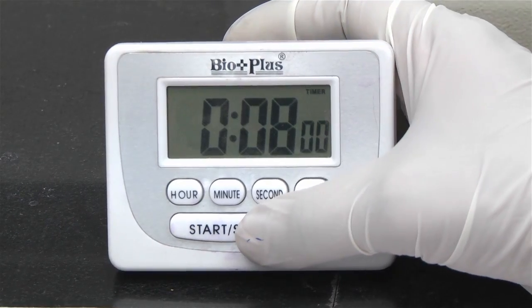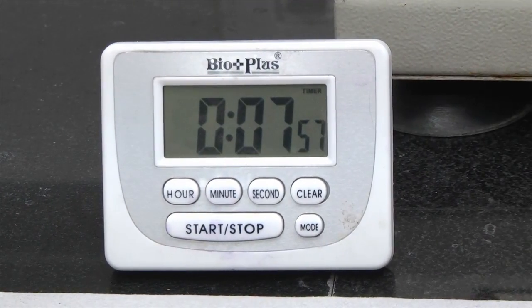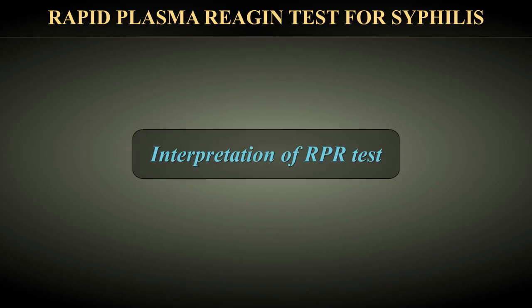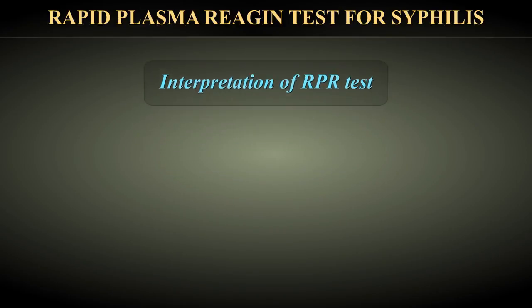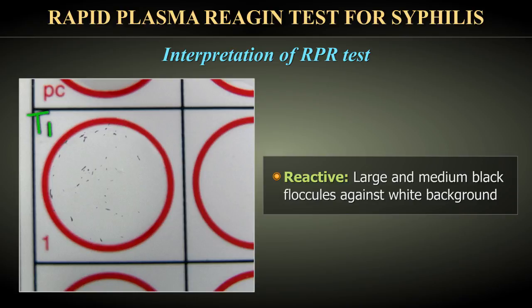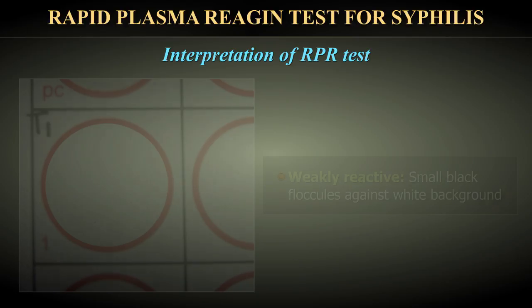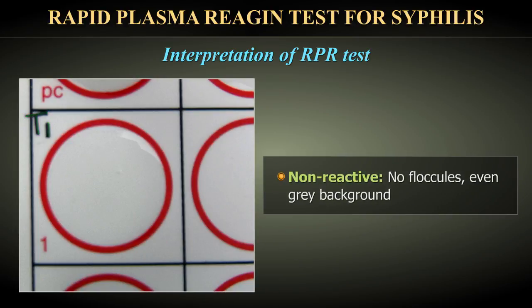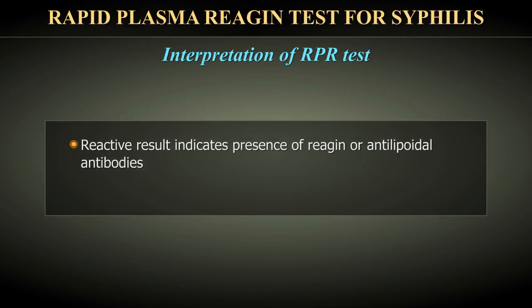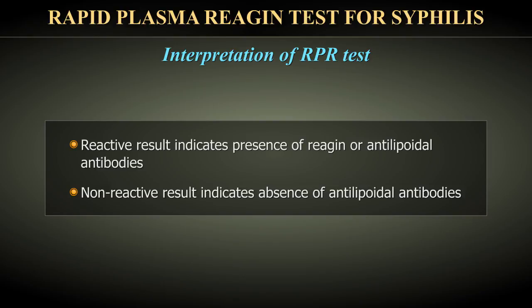Set the stopwatch and observe for flocculation macroscopically at 8 minutes. Reactive: large and medium black floccules against a white background. Weakly reactive: small black floccules against a white background. Non-reactive: no floccules, even grey background. A reactive result indicates presence of reaginic or antilipoidal antibodies.